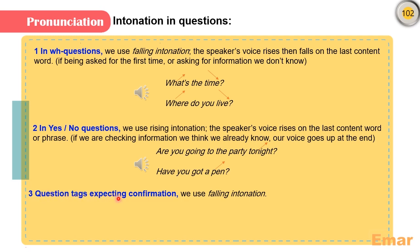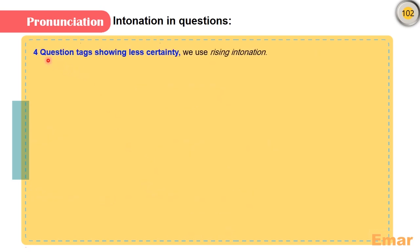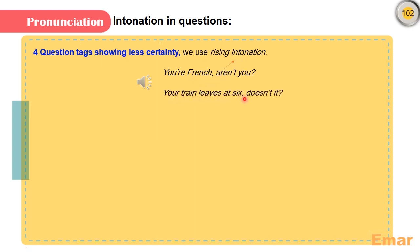Number three: question tags expecting confirmation — we use falling intonation. 'You're French, aren't you?' 'He's very tall, isn't he?' In this case we use falling intonation because we are expecting confirmation. Number four: question tags showing less certainty — we use rising intonation. 'You're French, aren't you?' 'Your train leaves at six, doesn't it?' In this case the question tag has a rising intonation because the speaker is less certain and wants an answer.